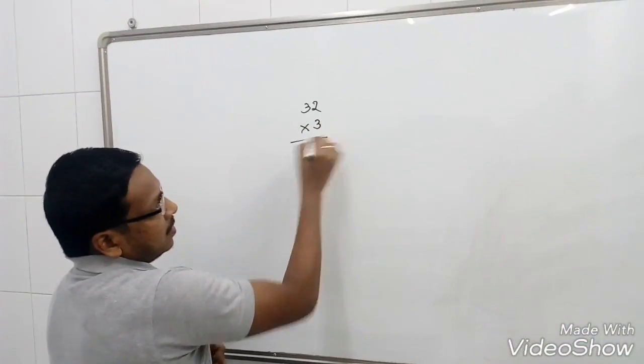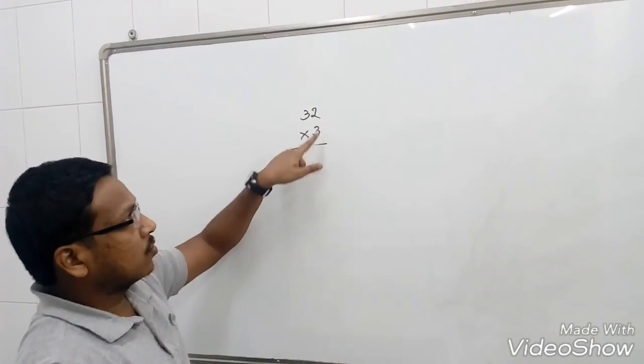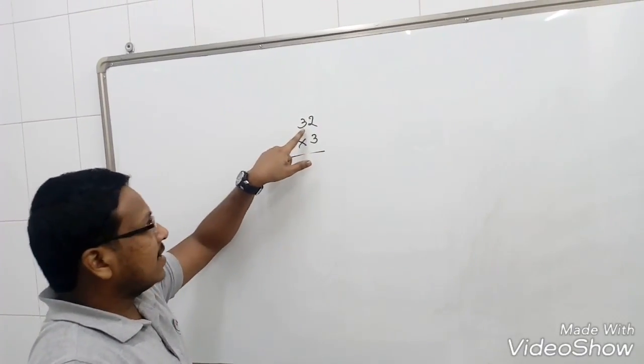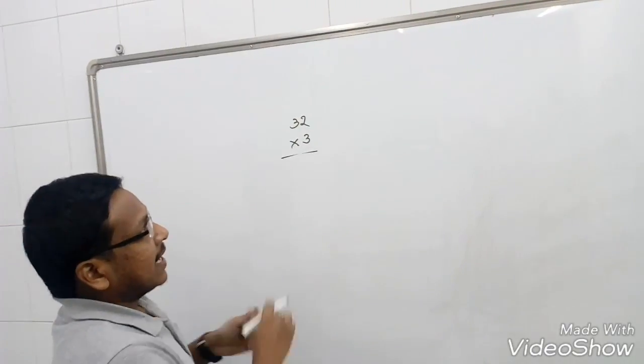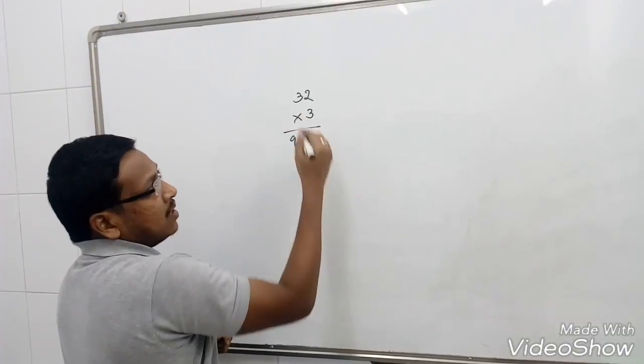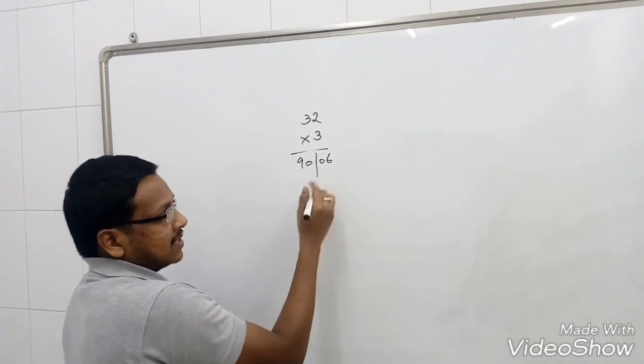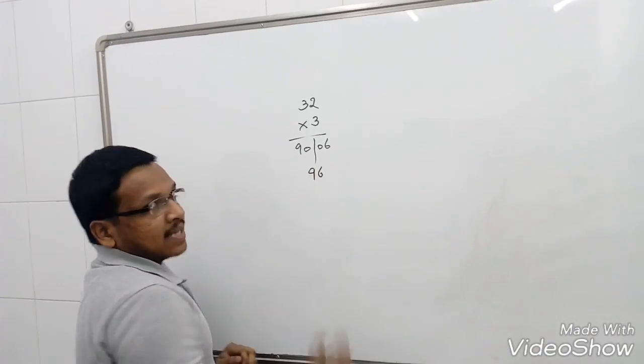32 into 3. We will start by multiplying 3 from left to right. So, 3 times 3 is 9. As it is in 10th place, we will assume as 90. And 3 times 2 is 6. So, I will add these both. So, 90 plus 6 is nothing but 96 is the answer.